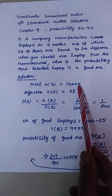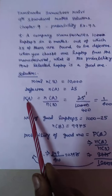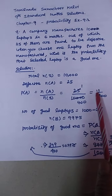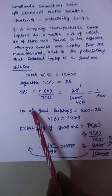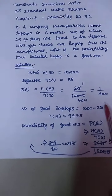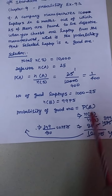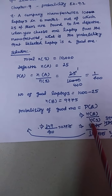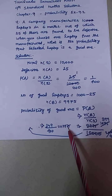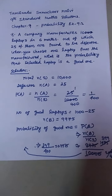To summarize: Total N of S equals 10,000. Defective laptops are 25 numbers. P of A equals N of A divided by N of S equals 1 by 400. Number of good laptops N of B equals 9,975. P of B equals N of B divided by N of S equals 9,975 divided by 10,000, which is 0.9975. So 0.9975 is the probability of selecting a good laptop.